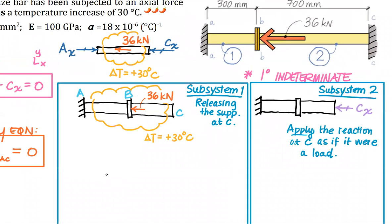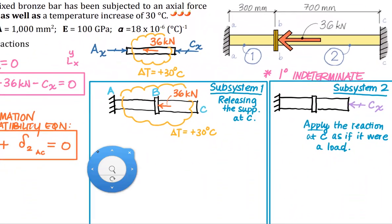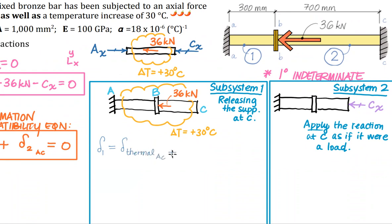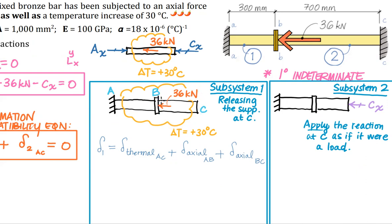We're ready to dig into analysis of subsystem one. The deformation in subsystem one between A and C equals my thermal deformation between A and C, plus my axial deformation (NL/AE) between A and B, plus my axial deformation between B and C. I'm splitting the last two terms because there are different amounts of force in those two segments.